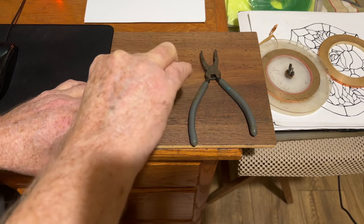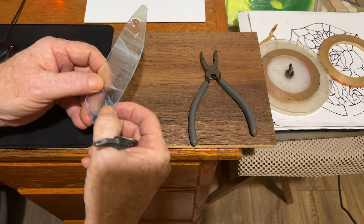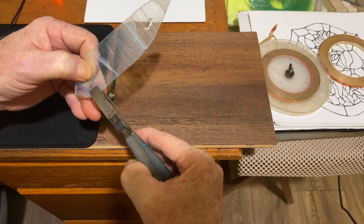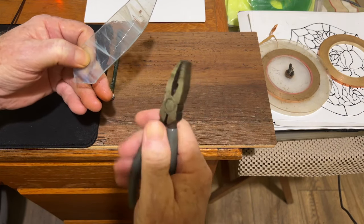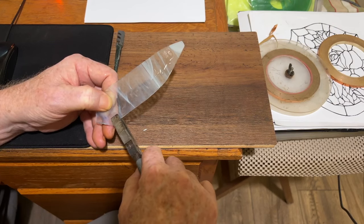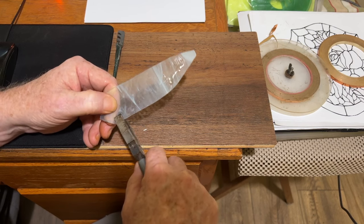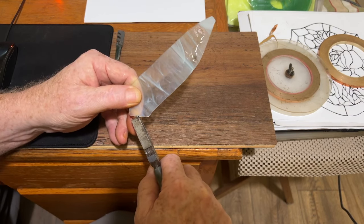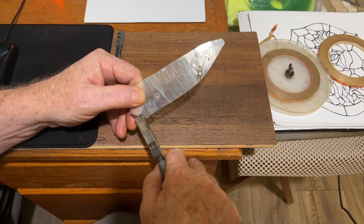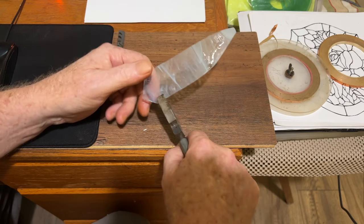Take the cutter, dip it in oil, and score right down off the end. You can't really see the score but it's right there. You want to bring the breaker part of the breaker-grouser plier right up to that score. Don't go in too far. Start near the bottom because that's where the weakest point is. Don't go all the way down. Come in about a quarter inch.